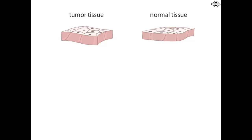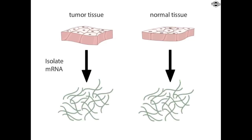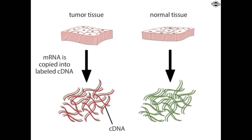When a gene is expressed, it is transcribed into mRNA. The mRNAs from the two tissues are isolated and converted into complementary strands of DNA, called cDNAs, by the enzyme reverse transcriptase. To distinguish between the two pools of cDNAs, the molecules are fluorescently labeled — red for the tumor-derived pool, and green for the cDNAs derived from the normal tissue.